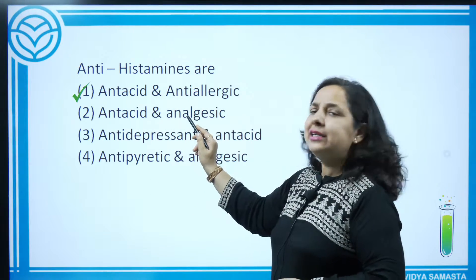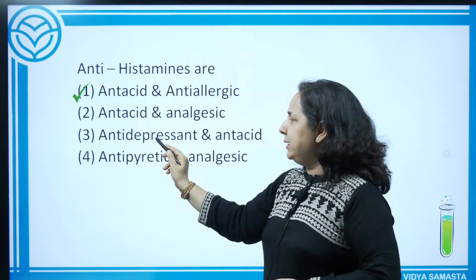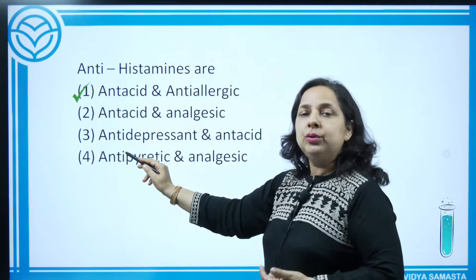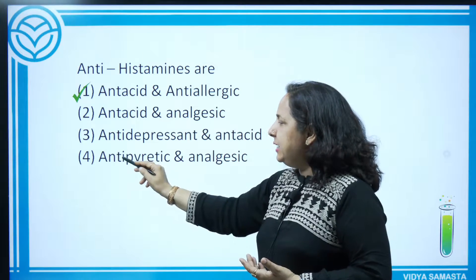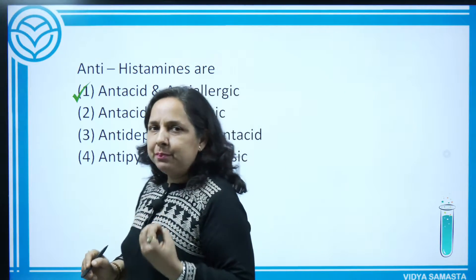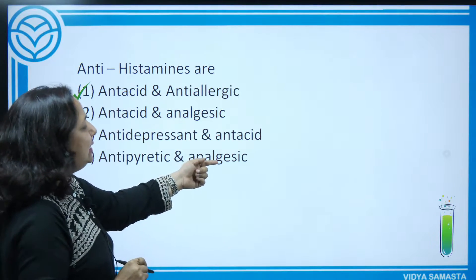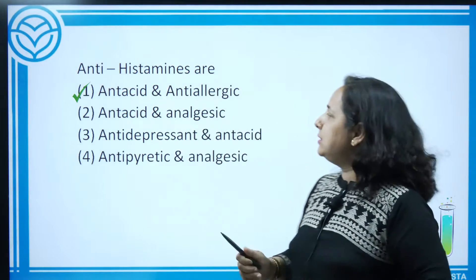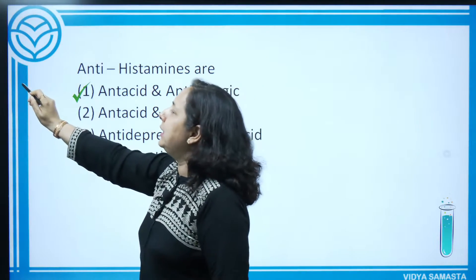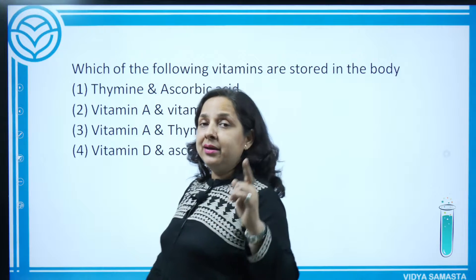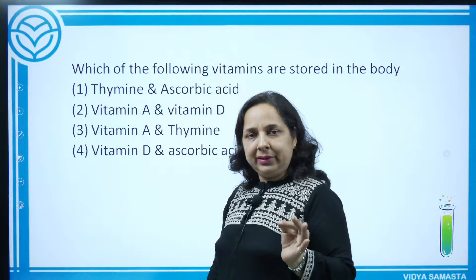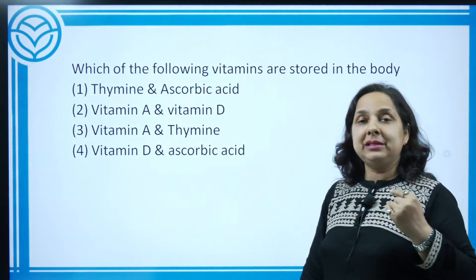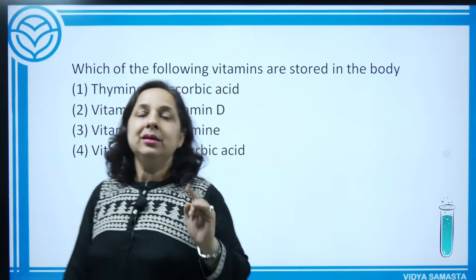Antidepressants are against depression. Antipyretics are against fever — for example, combiflame, disprin, paracetamol (PCM) is an antipyretic drug. Analgesics are pain killers — disprin, aspirin, ceridon are pain killers. The question is on antihistamines from Chemistry in Everyday Life. For the next shift, revise antiseptics, antibiotics — broad spectrum and narrow spectrum — and know each one's use.